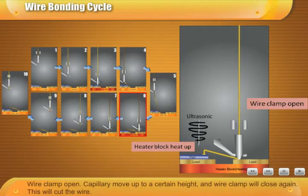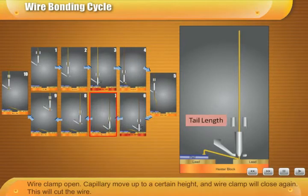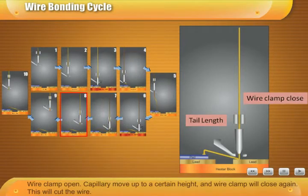Wire clamp open. Capillary moves up to a certain height, and wire clamp will close again. This will cut the wire.